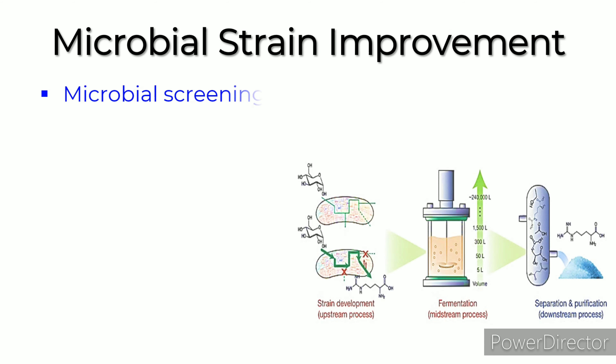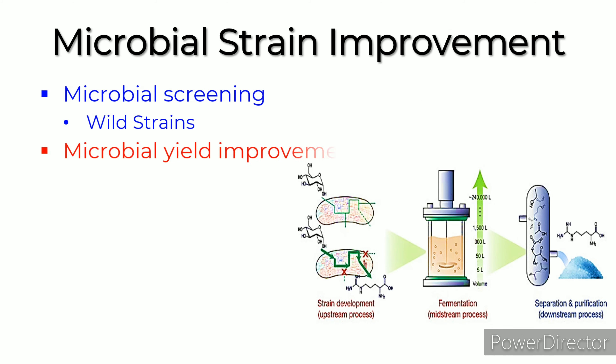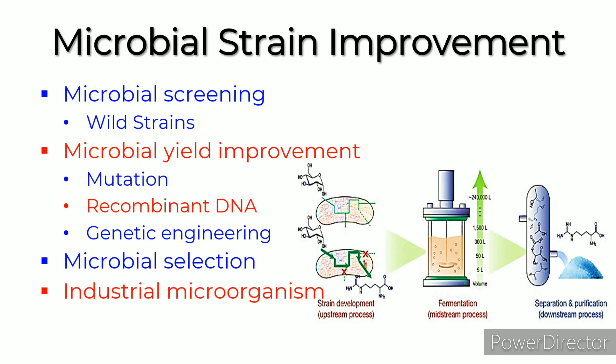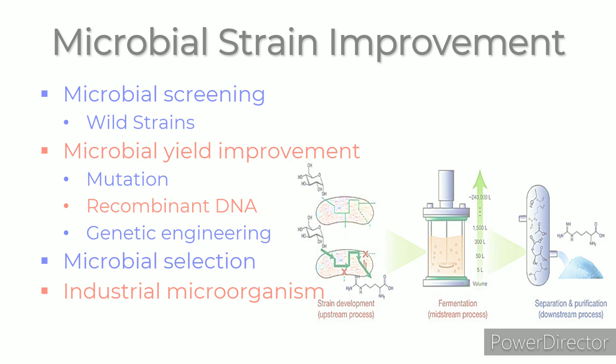Microbial strain improvement involves biotechnological tools used for screening wild microbial strains to enhance the quality and yield of microbial products. The tools include mutation, recombinant DNA, and genetic engineering for selection and development of improved strains for industrial use.